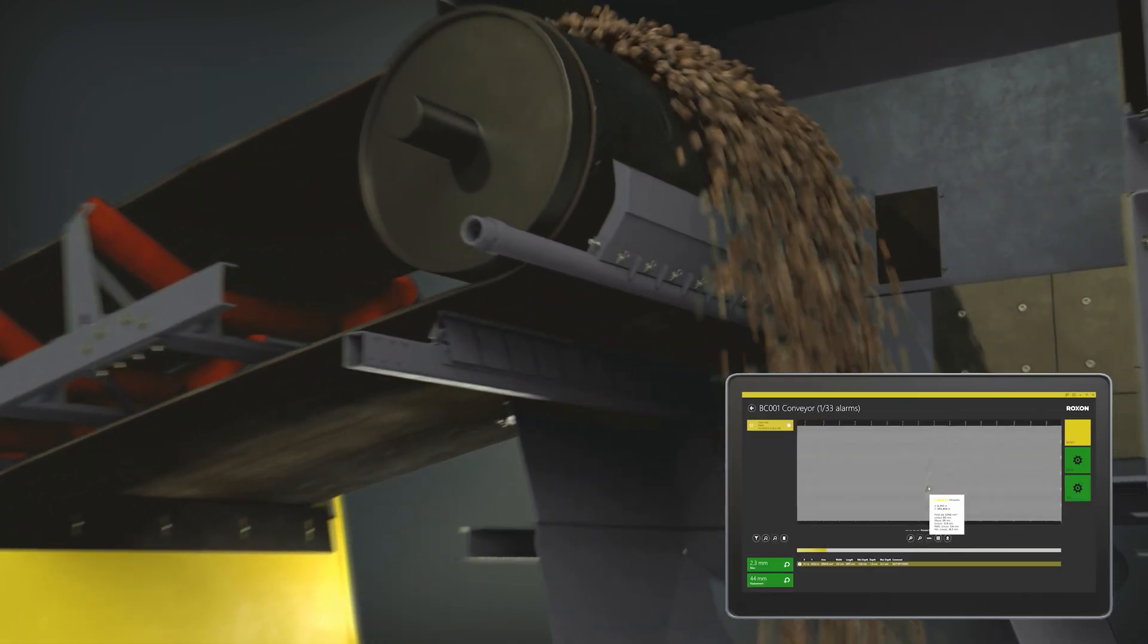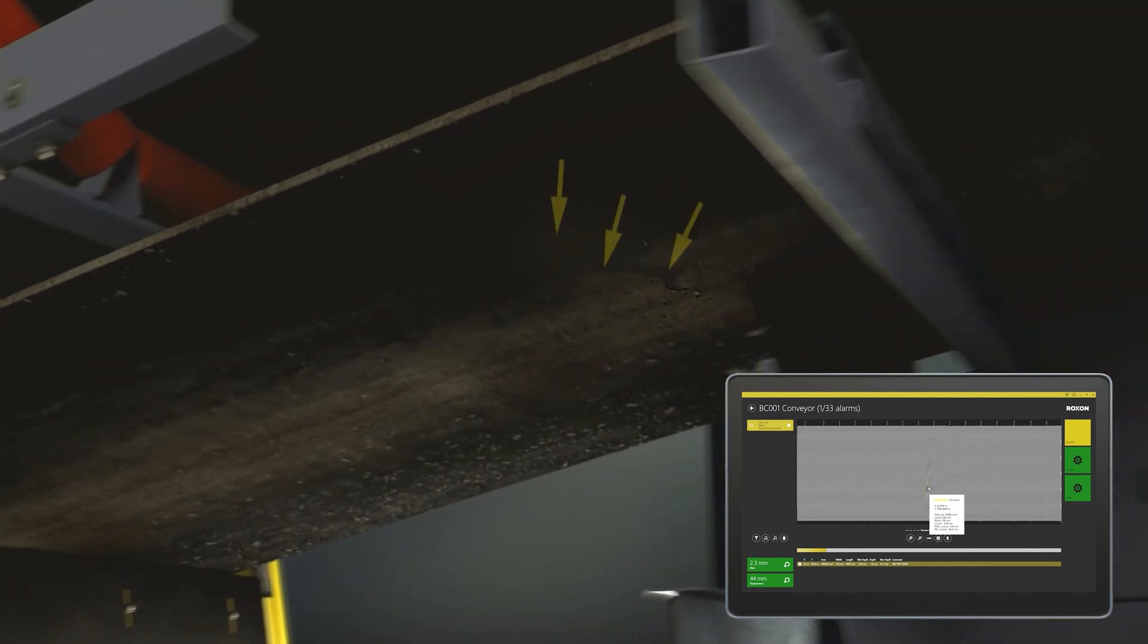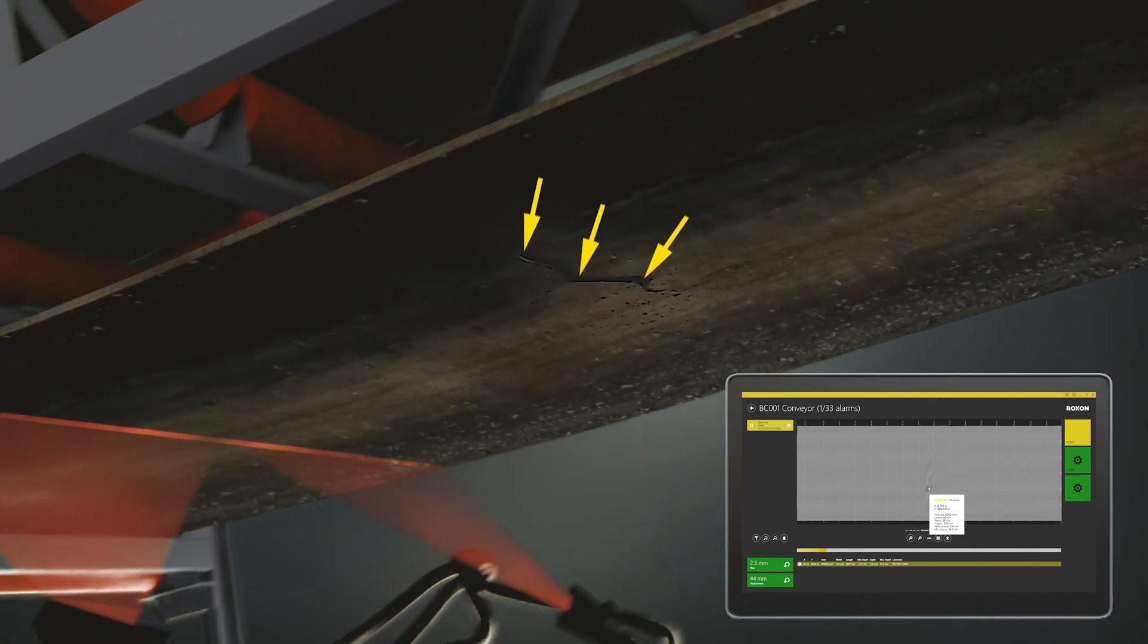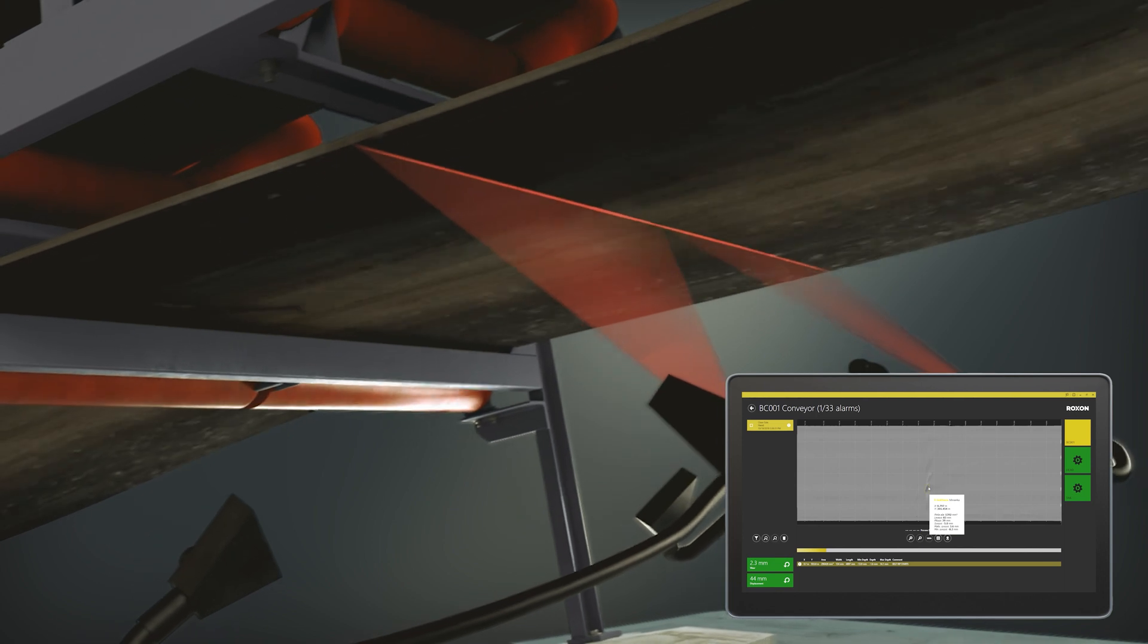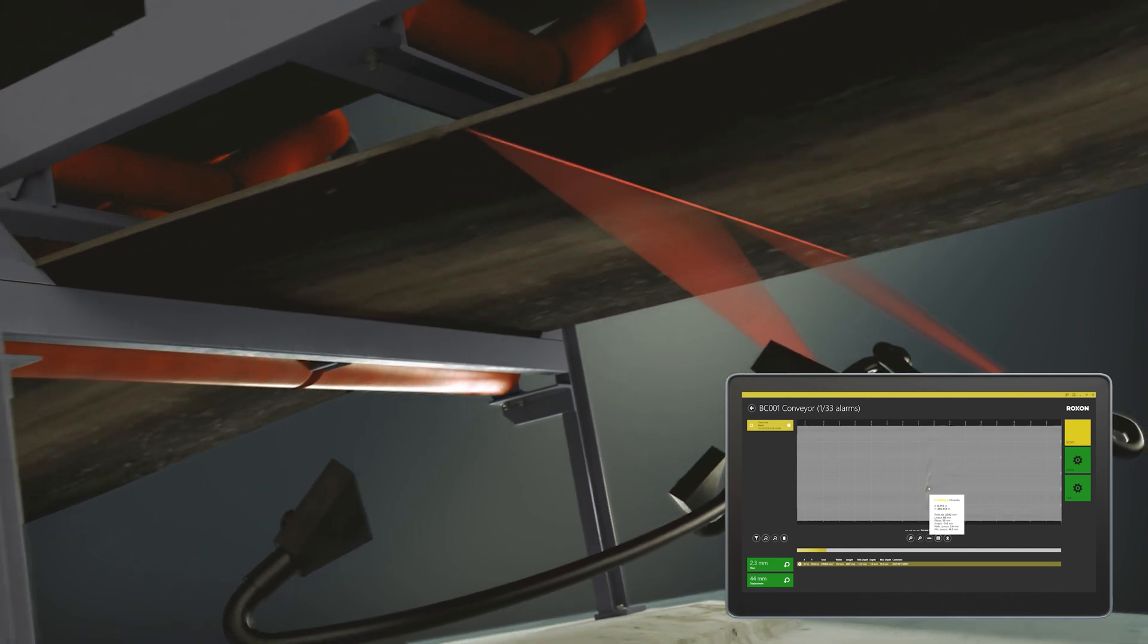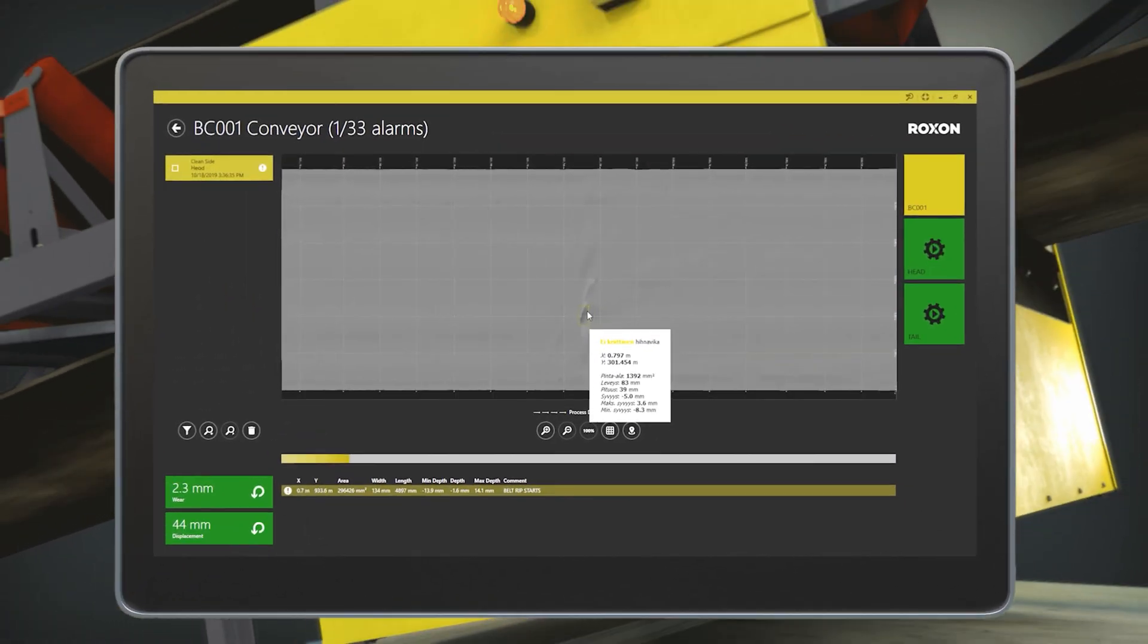Belt splices are always an important thing in a conveyor belt. There may be several in the belt. Opening or otherwise damaging the belt splice may cause it to break and stop production. This also has an important impact on personal safety.